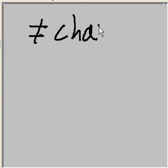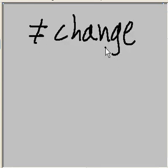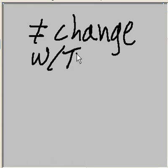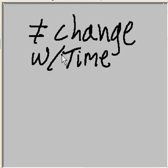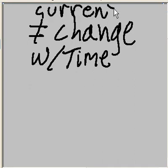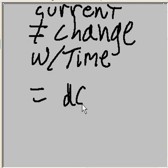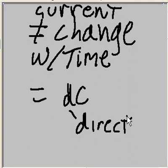What kind of current do we have? We have current that does not change with time. It doesn't change with time? That's right. It's a constant. We have a name for this kind of current. A current that doesn't change with time is called DC — direct current.